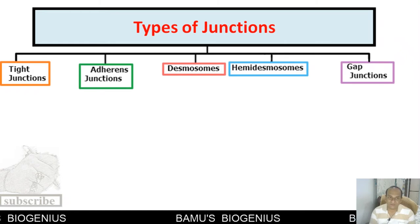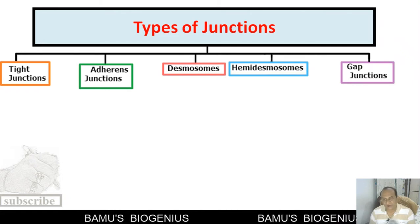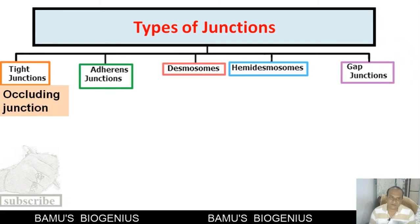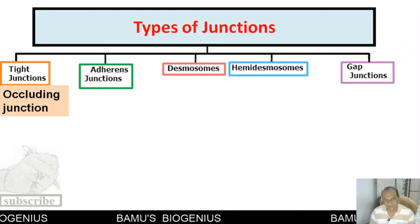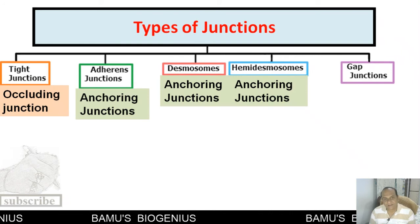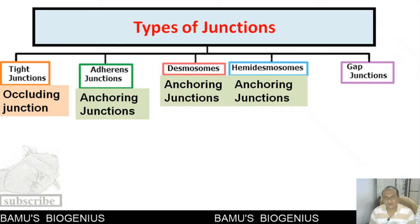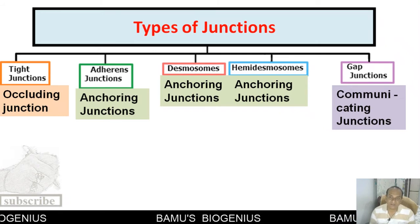In a multicellular animal world we find five different types of junctions: tight junctions, adherent junctions, desmosomes, hemidesmosomes, and gap junctions. Out of these, tight junctions are a kind of occluding junctions — they block the entry or exit of certain types of molecules. Then there are three types of anchoring junctions, which hold the cells together. The last one is called the communicating junction.